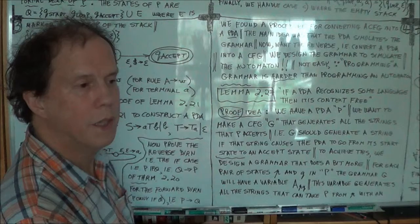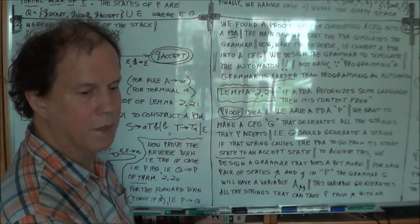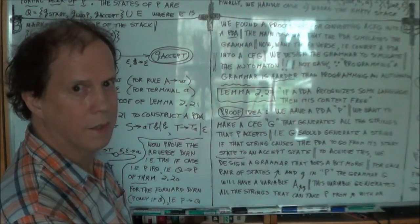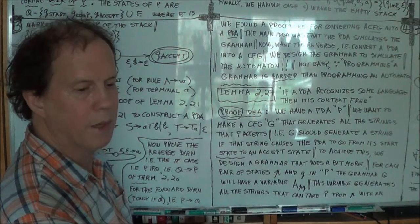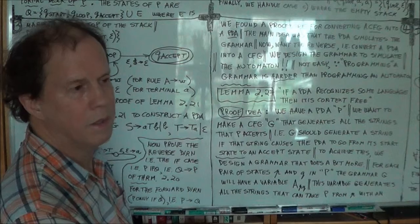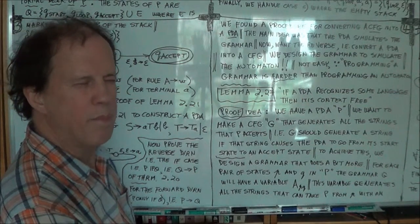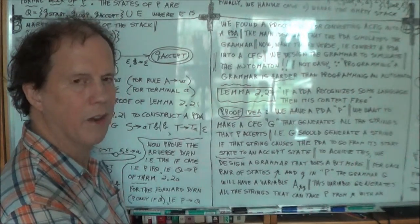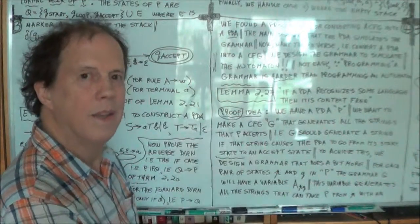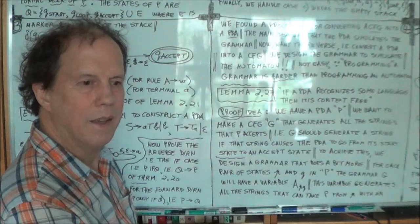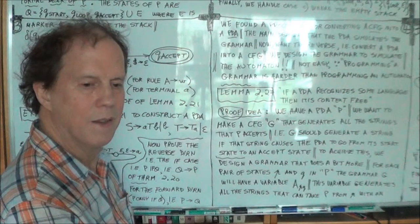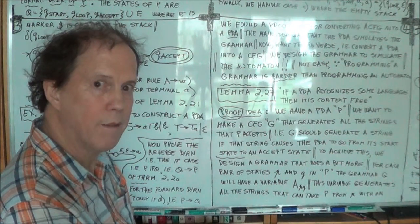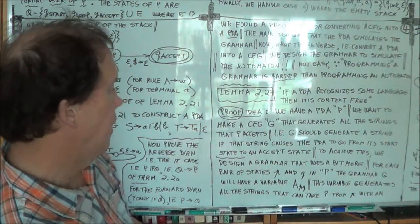Okay, now how does a PDA recognize a string? Well, it starts in its start state, and it reads the string, and it ends in the accept state. So you have to generate a grammar that behaves in the same way. So you need now to create a grammar that behaves like a PDA. Now, before it was the other way around, right? We had a PDA that behaved like a grammar. Well, now you've got to create a grammar that behaves like a PDA, and this grammar generates the same string that is accepted by the PDA. Okay? You follow me so far. Right.